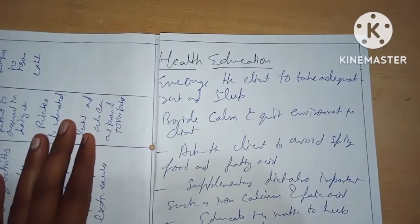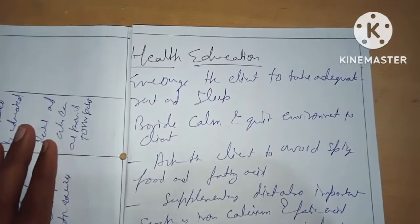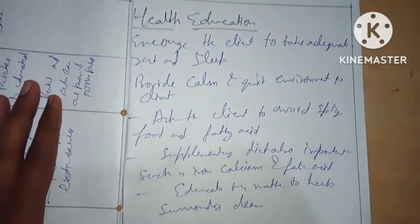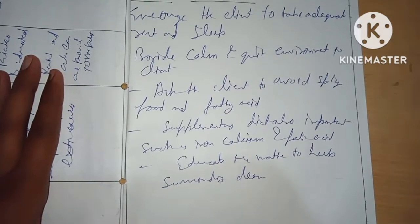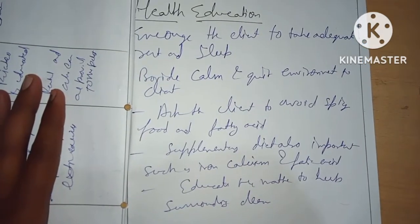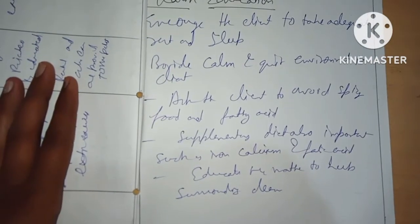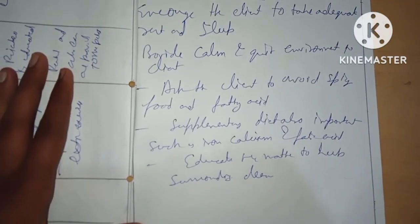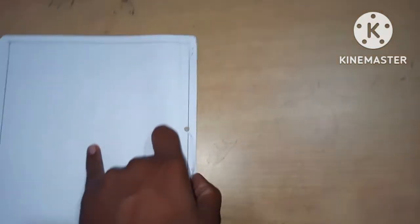Health education: encourage the patient to take adequate rest and sleep, provide a calm and quiet environment. Regarding diet: ask the client to avoid spicy food and fatty acids. Supplementary diet is also important, such as iron, calcium, and folic acid. Educate the mother to keep her surroundings clean.